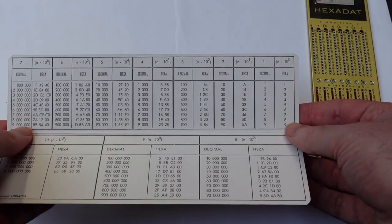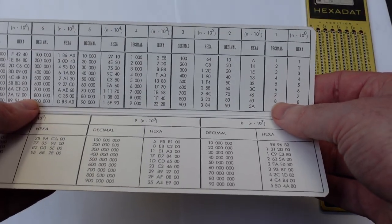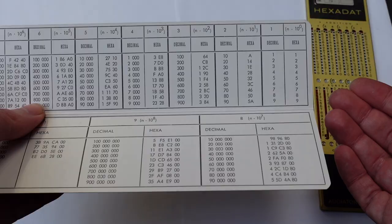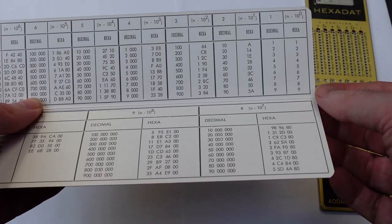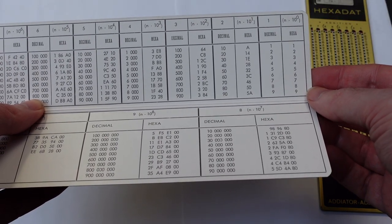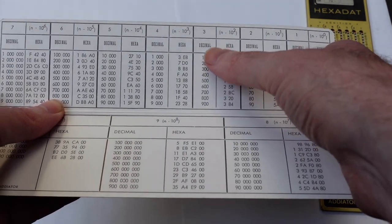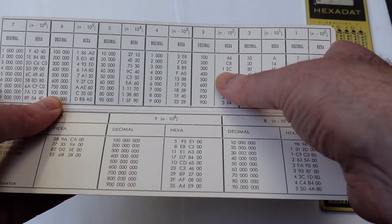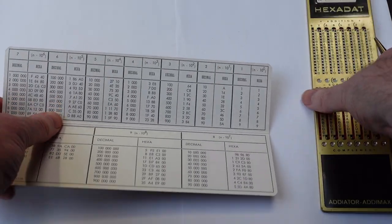So if I want to enter the hexadecimal number, that's say 354. I'd look up 300. That's 1, 2, and C. And I enter that.